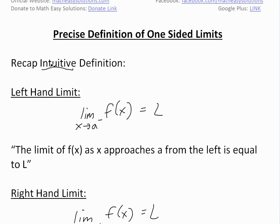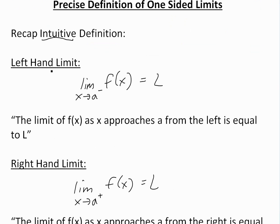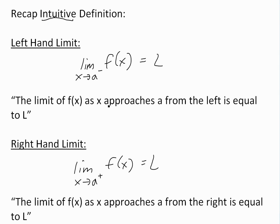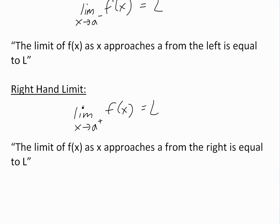To recap the intuitive definition — not the precise one — for left-hand limits: the limit as x approaches a from the left (we put a minus sign here) of f of x equals L. The right-hand limit is the exact same thing, but with a plus sign: the limit of f of x as x approaches a from the right side.